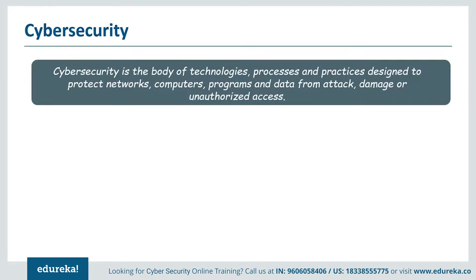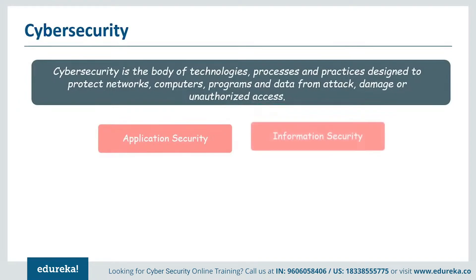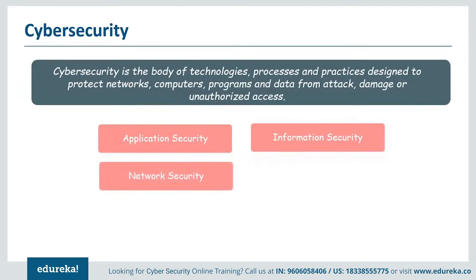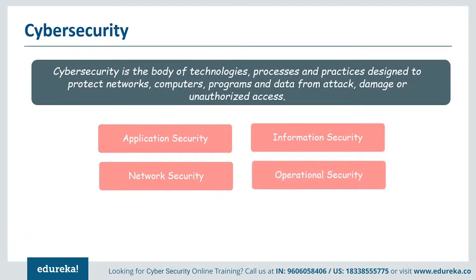Ensuring cyber security requires coordination of efforts throughout an information system. This includes application security, which mainly focuses on keeping software and devices free from cyber threats; information security, which is protecting the integrity and privacy of data to prevent data breaches; network security, which is the practice of securing a computer network from intruders whether targeted attackers or malware; and operational security, which includes all the processes for handling and protecting data assets, user permissions when accessing a network, and procedures that determine how and where data must be stored and shared.